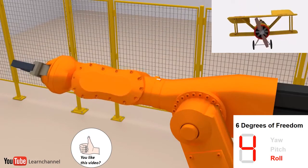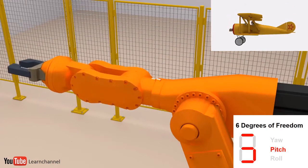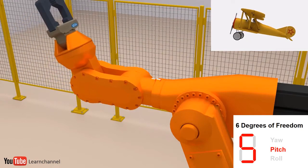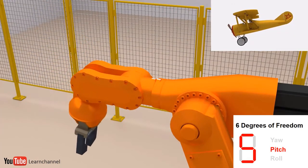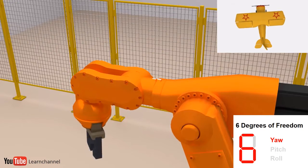Roll rotates the tool about its center axis. Pitch moves the tool vertically. Yaw turns the tool left and right.